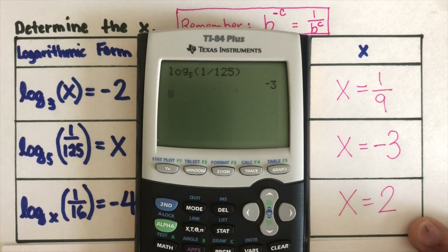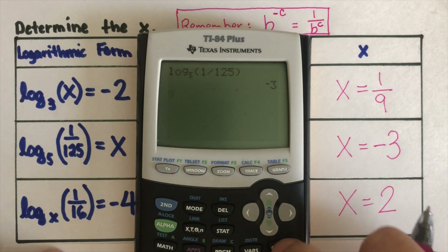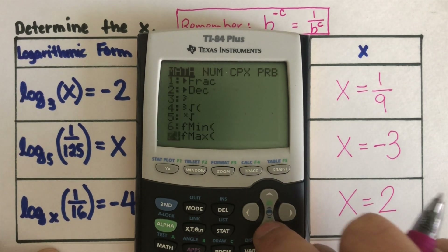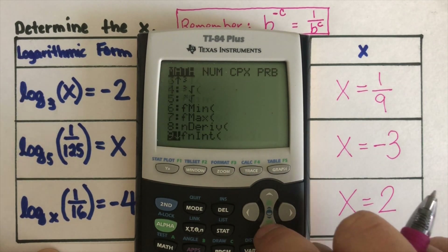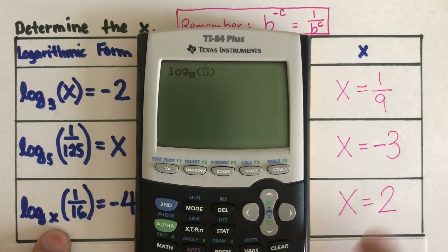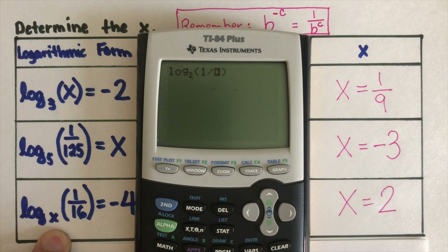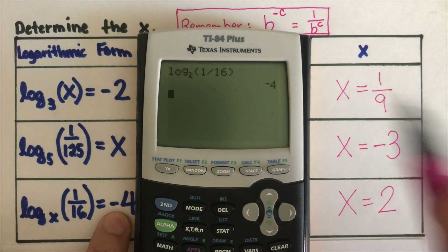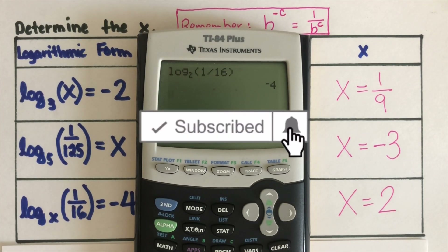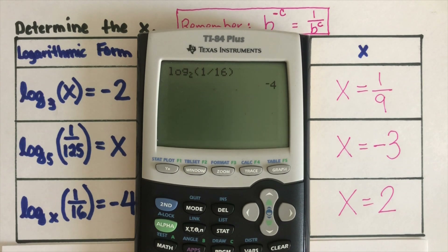Our x is 2. Let's check using the calculator. Setting up the log with base 2 — the one we solved — and 1 over 16, our answer should be negative 4, and it is negative 4. If you find this video helpful, please like and subscribe for more math videos. See ya!